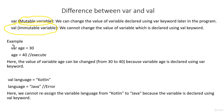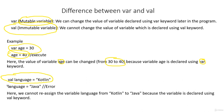For example, you can see here we have a var h equal to 30, and later we can reassign a value of 40. So var h is equal to 30 first, then h is equal to 40 — the value can be changed from 30 to 40 because the variable h is declared using a var keyword. And here, val language is equal to Kotlin, and later we want to change the value of this variable to Java.